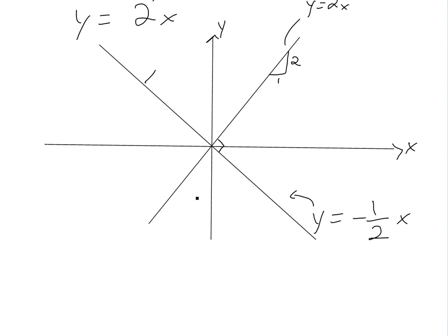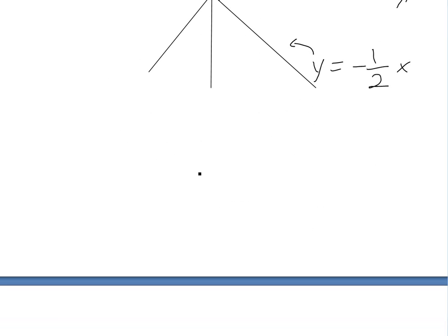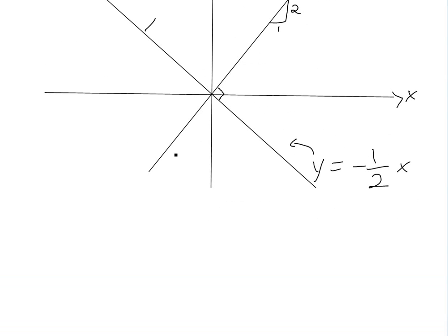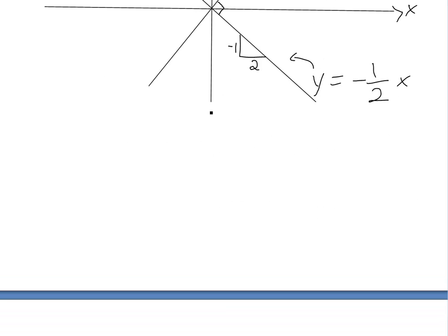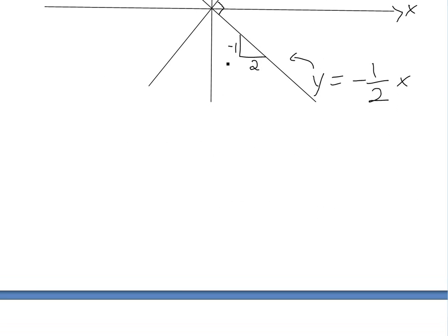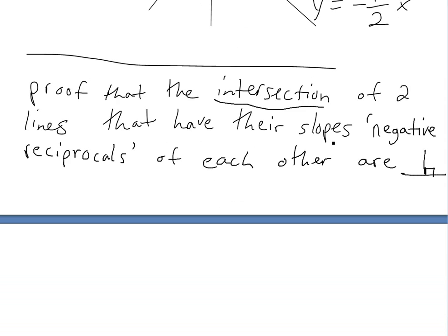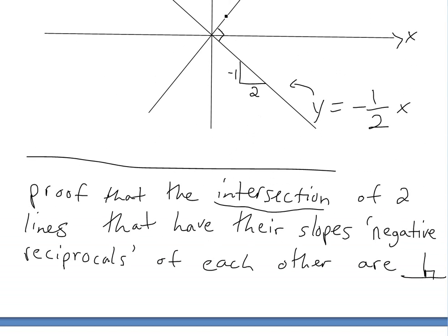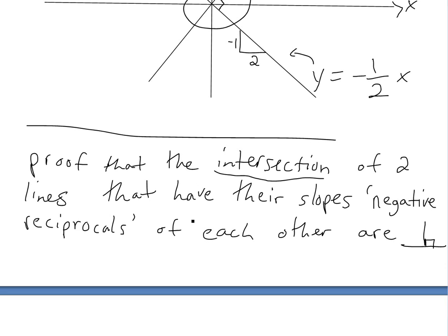What I want to show in this video is to prove that it's perpendicular. Basically, the slope here is going to be negative 1 and 2 — that's the slope, rise of negative 1 and run of 2. What I want to prove is that the intersection of two lines whose slopes are negative reciprocals of each other are perpendicular.